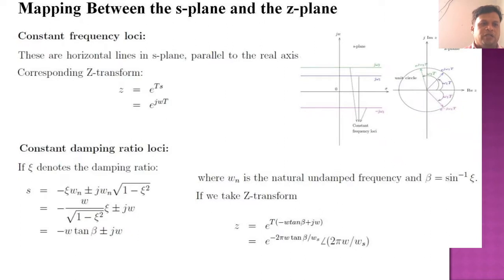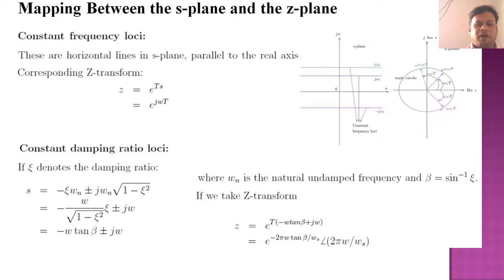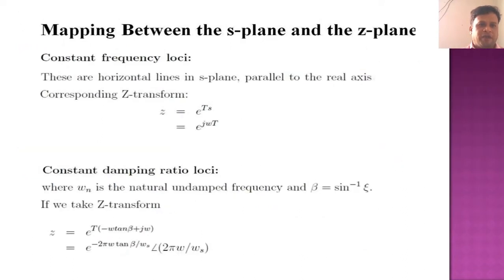For constant damping ratio loci, the damping ratio is given by s equal to minus zeta-omega-n plus or minus j-omega-n times the square root of 1 minus zeta-squared, written as minus omega-tan-beta plus or minus j-omega. The same thing in the z-transform equals e^(T times (minus omega-tan-beta plus j-omega)), which equals e^(minus 2-pi-omega-tan-beta divided by omega-s) at an angle of 2-pi-omega divided by omega-s.